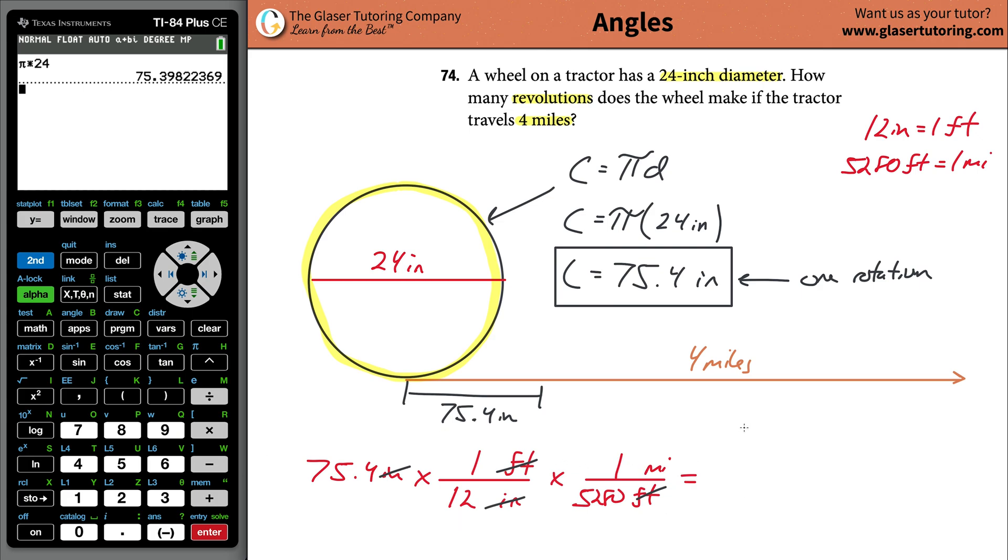Now we can cancel the units of feet, and the only unit that's left is miles. Since these two units are in the denominator, it's basically like saying you're going to take 75.4 divided by 12 and then divide that by 5,280. Go to your calculator and divide by 12 times 5,280. When you do that, we get a value here of 0.00119 miles.